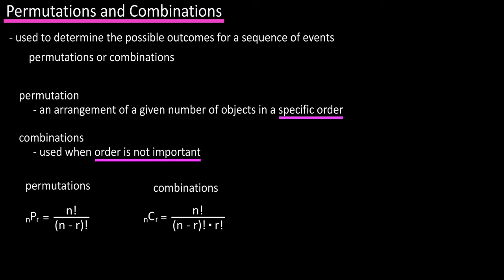Here are the main formulas for both of these. For permutations, we have nPr equals n factorial divided by the quantity n minus r factorial. And for combinations, we have nCr equals n factorial divided by the quantity n minus r factorial times r factorial.